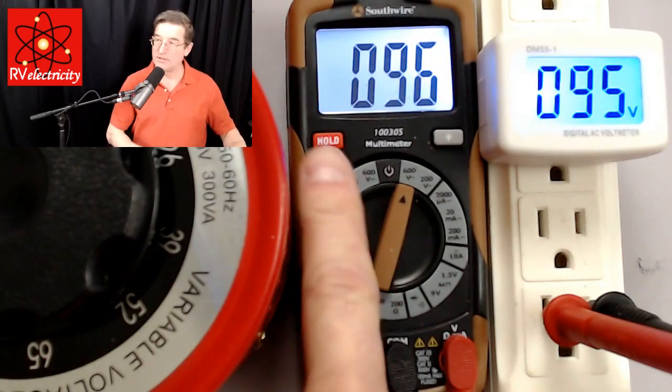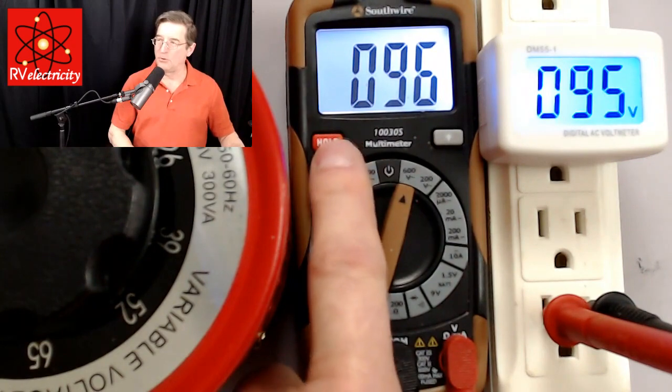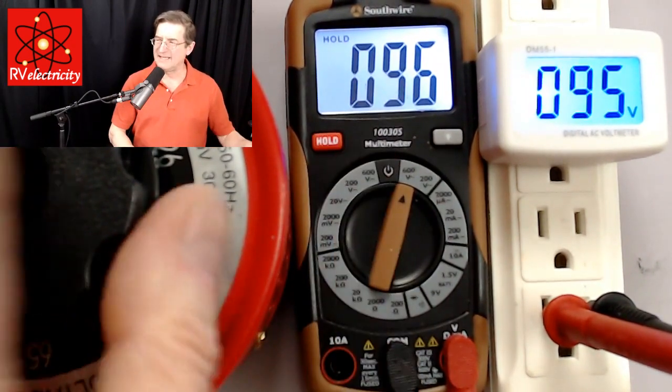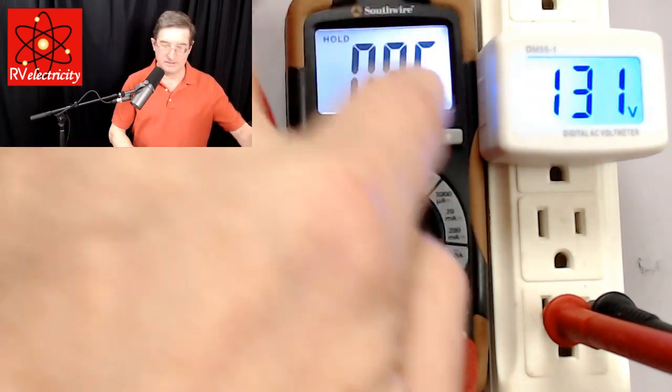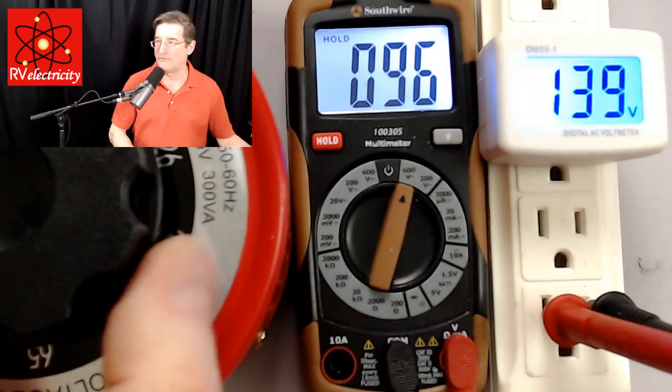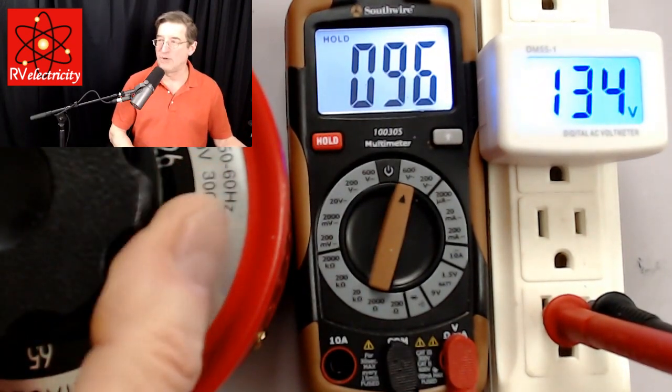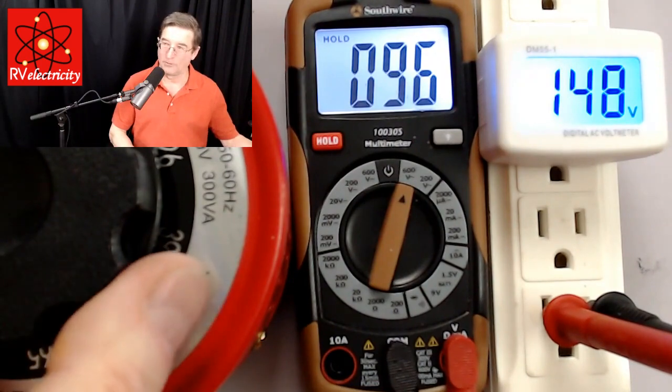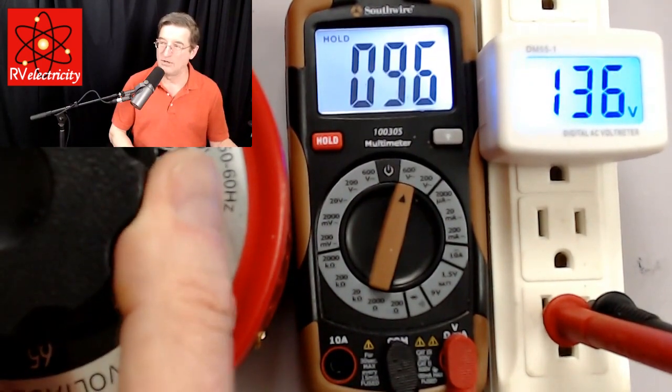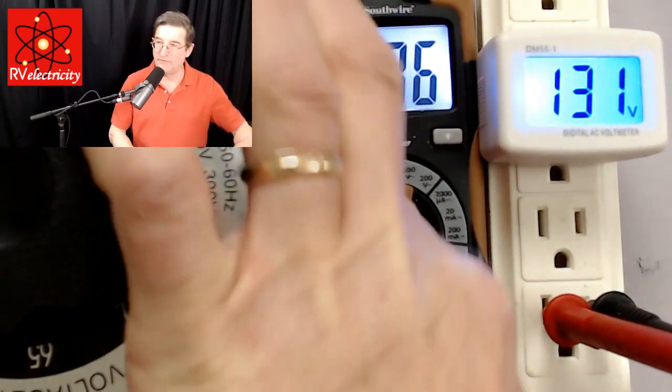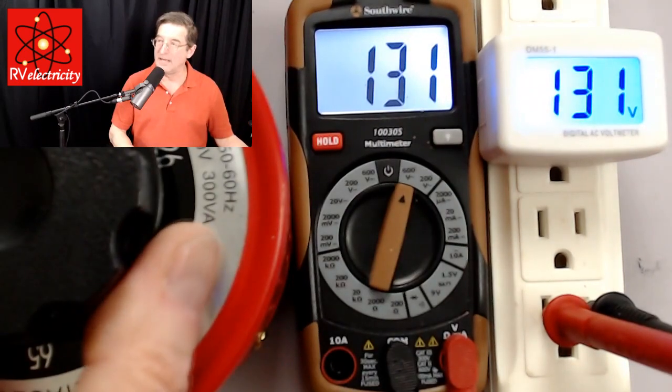Let me show you what this hold function does. When you push the hold function, it says hold and it kind of locks this meter reading in at whatever your last reading was. So you do not want to leave that engaged because you could be 140 volts, 150 volts in there and not know it. So always leave that little hold button disengaged.